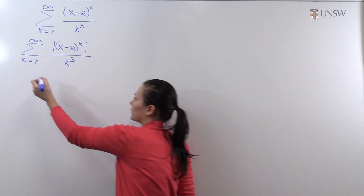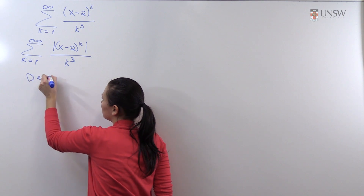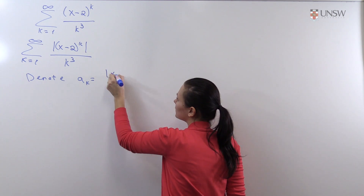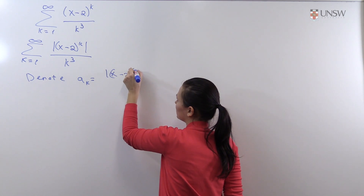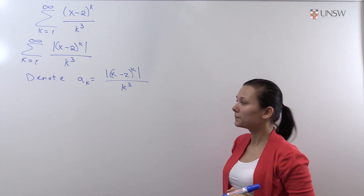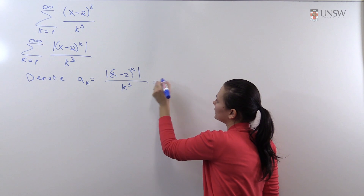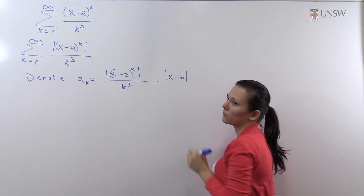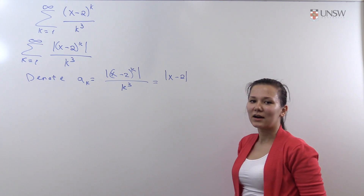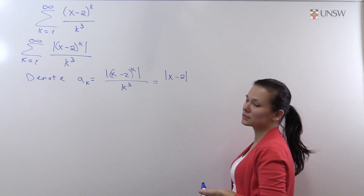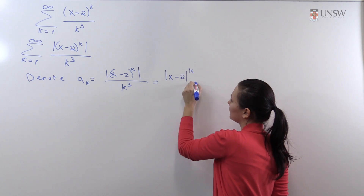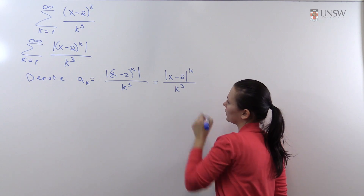We denote by a_k the term in this series, which is the absolute value of (x minus 2) to the power k, divided by k to the power 3.